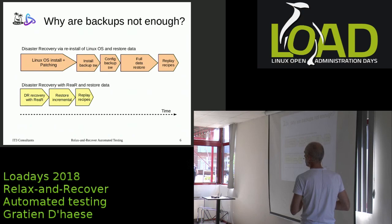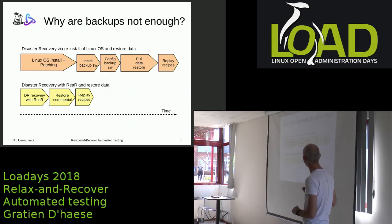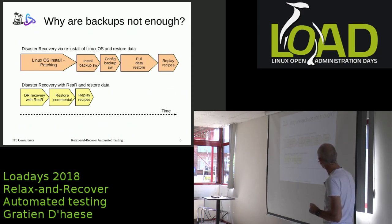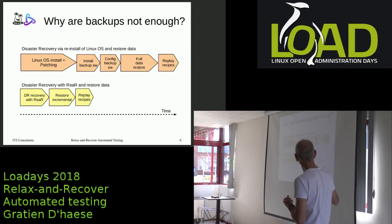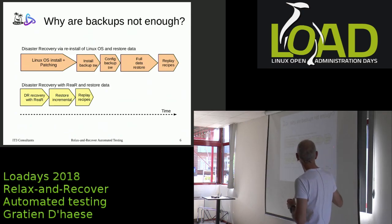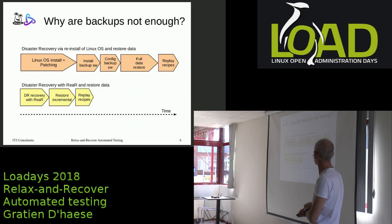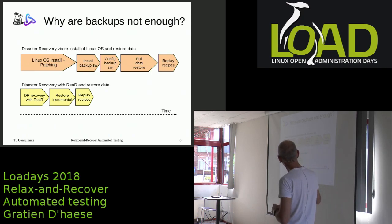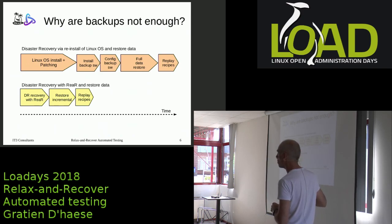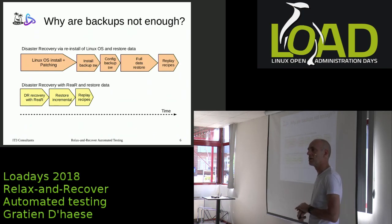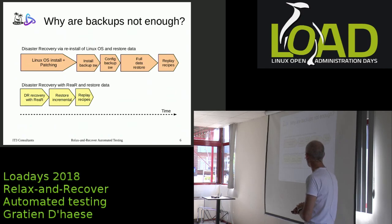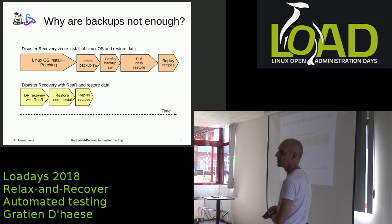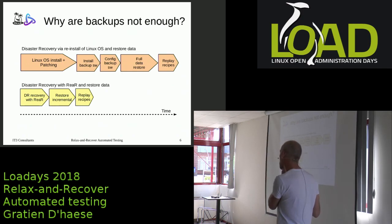A lot of people still say 'we have good backups,' and I always say backups are not enough. This slide explains it well: if you have a disaster you restore on the old way — you restore the OS, install backup software, configure it, then do a full restore of data, then do your playbooks. With Relax-and-Recover, a large part of that is handled, and you only need to restore incrementals. The time scale decreases a lot, and that is the important part: getting your system up and running very quickly.